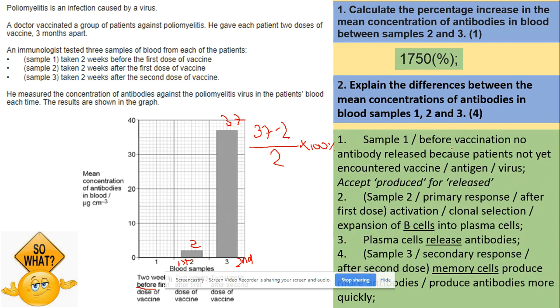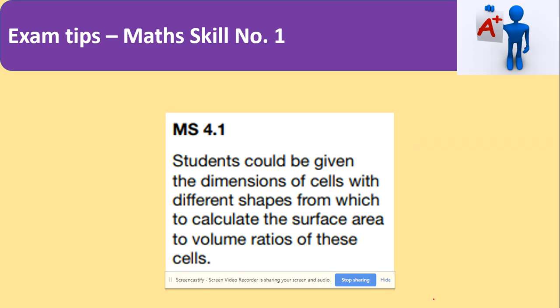Sample 1, before vaccine, no antibodies. Sample 2, after the first dose. B cells divide into plasma cells, which releases antibodies. And sample 3, you've got memory cells which were produced and they produce antibodies quicker and more of the antibodies. If you watch my video on B cells, you will see those key terms there as well. So now section 3, math skills.